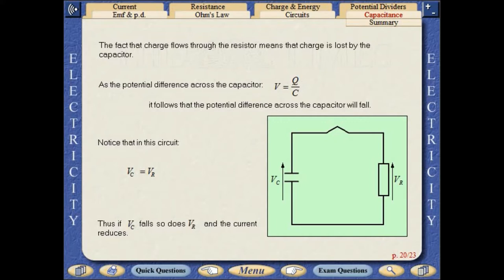Notice that in this circuit, VC equals VR. Thus, if VC falls, so does VR, and the current reduces.